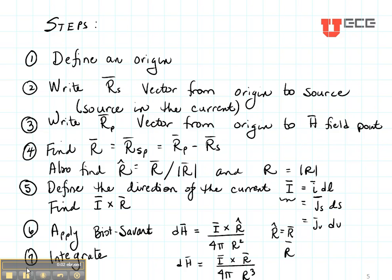Now let's talk about the steps that we use for the Biot-Savart Law. The steps are very similar to Coulomb's Law except for step number five that's an addition. So in Coulomb's Law or in Biot-Savart's Law, the first thing we do is choose a coordinate system and define a convenient origin.